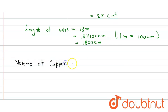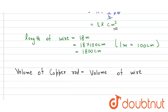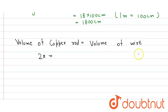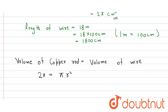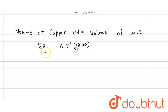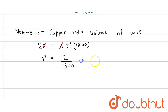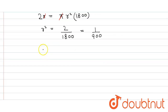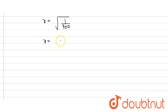The volume of the copper rod equals the volume of the wire. Volume of copper rod is 2 pi centimeter cube. The wire is also a cylinder, so its volume is pi r squared into 1800. Pi cancels on both sides, giving r squared equals 2 divided by 1800, which equals 1 divided by 900. So r equals the square root of 1/900, which gives r equals 1/30 centimeter.